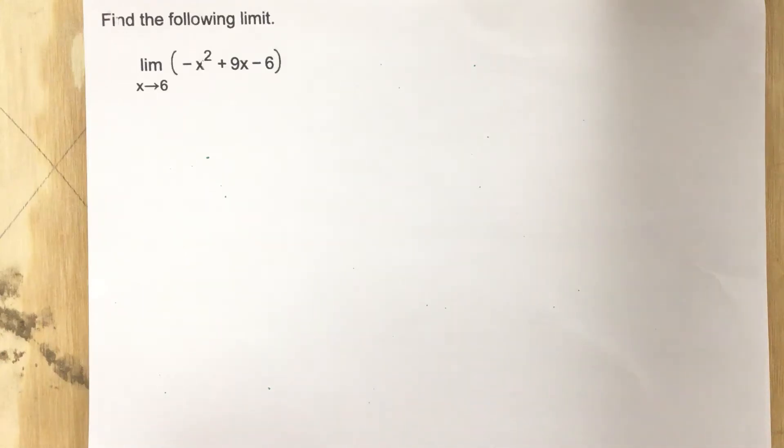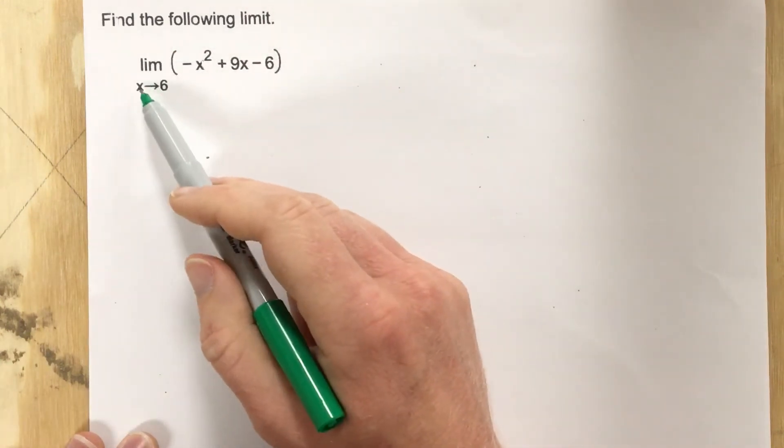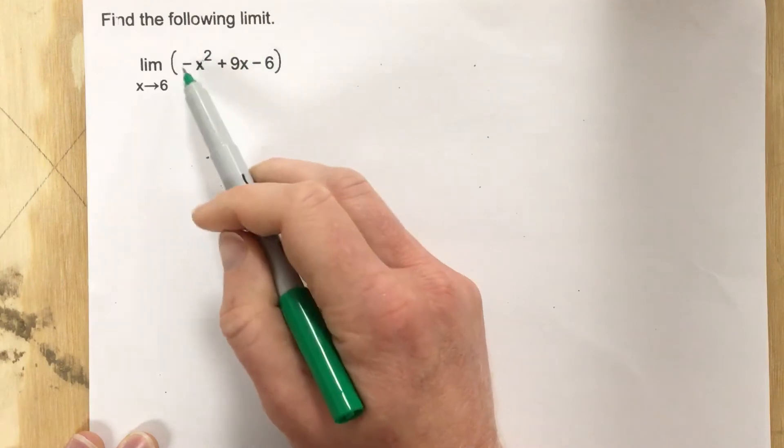This is problem number three for assessment number six. In this problem it says, find the following limit. And they give you the limit as x approaches six for this quadratic here.